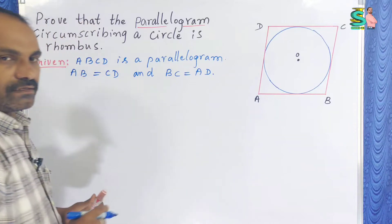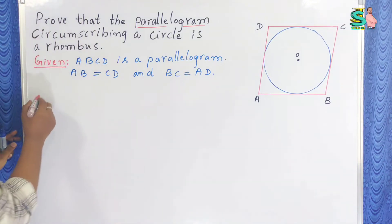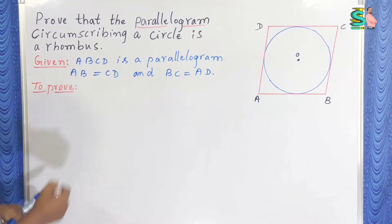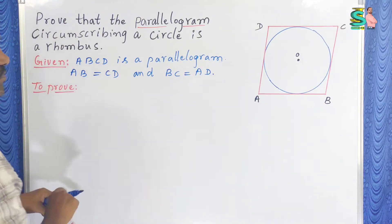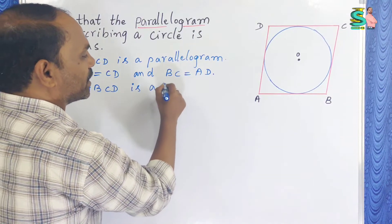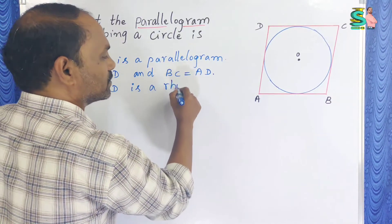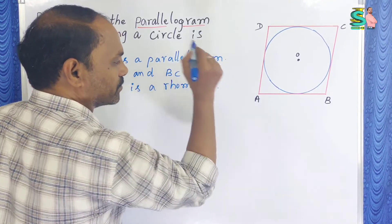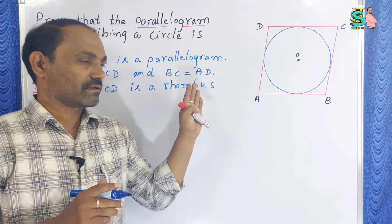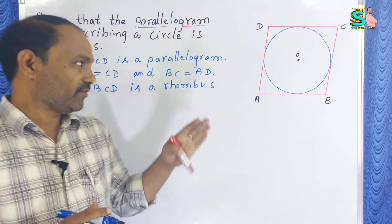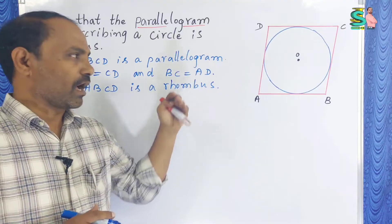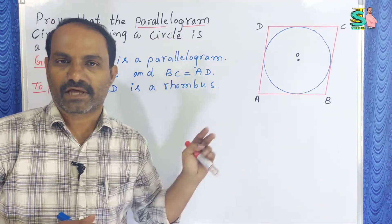Opposite angles are also equal. Now next, what we are going to prove in this question? We are going to prove that ABCD is a rhombus. What is the rhombus property? If in a parallelogram all four sides are equal, then it is a rhombus. All properties of the parallelogram are satisfied by a rhombus.